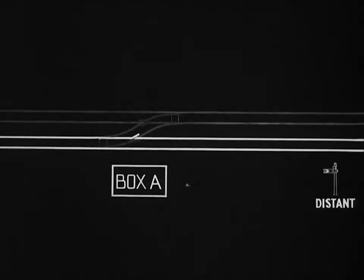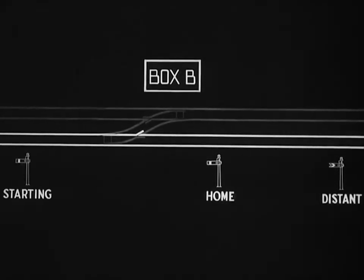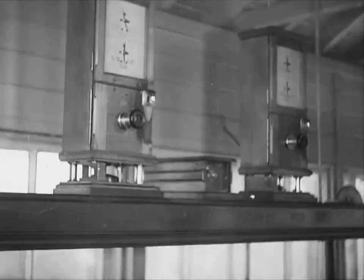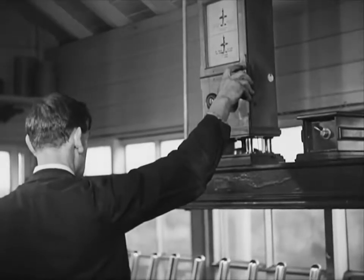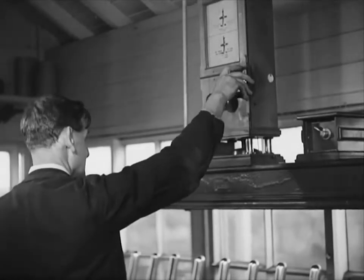In order to explain how train signalling works, let's consider three signal boxes — A, B, and C — on a simple main line. Each box controls a section of line and three signals: distant, home, and starting. Each signalman communicates with the boxes on either side by means of telegraph instruments and bells. A bell code is arranged for various communications and to describe types of train — for instance, four beats on the bell indicates an express passenger train.